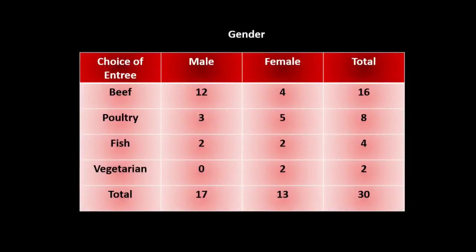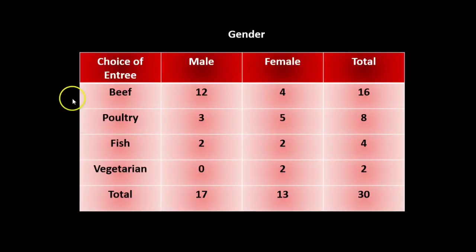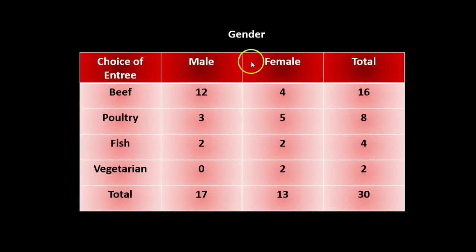Here is a simple cross tabulation of 30 people who were asked what their choice of entree was at their last restaurant meal. They were also asked to write down their gender. We can see from the table the two variables are choice of entree and gender. There are four choices of entree: beef, poultry, fish, and vegetarian, and this is a cross tabulation by gender, so we have male and female.